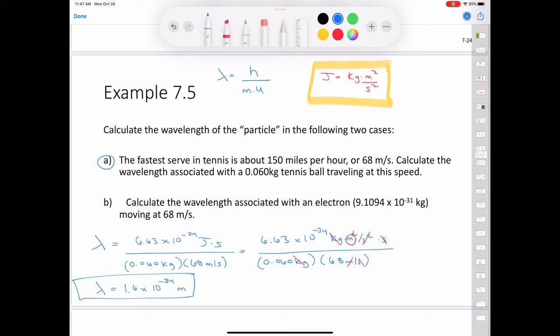This is an exceedingly small wavelength considering that the size of an atom itself is on the order of 1 times 10^-10 meters. For this reason, the wave properties of the tennis ball cannot be detected by any existing measuring device.